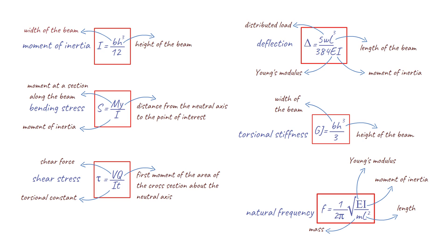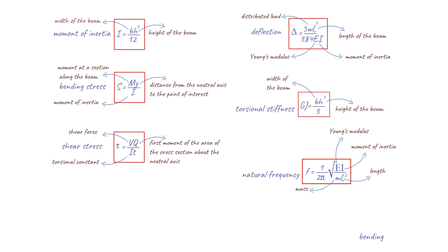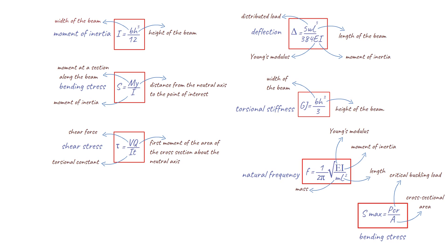Next, we have the formula for maximum bending stress in a column. This is represented by the equation where P_cr is the critical buckling load of the column and A is the cross-sectional area of the column. This formula is used to calculate the maximum amount of stress a column can withstand in a bending load.